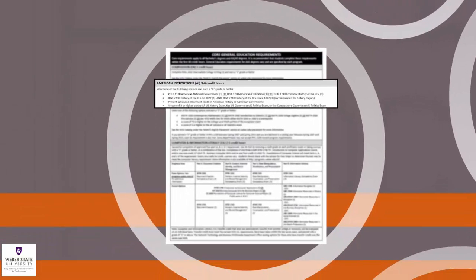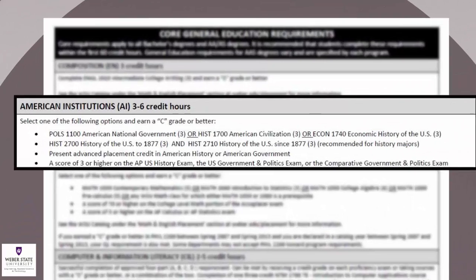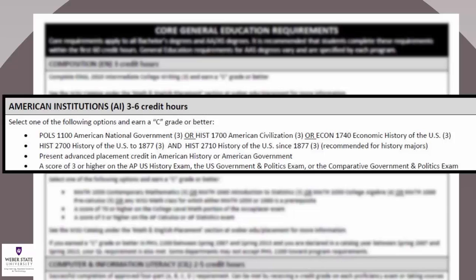The second requirement is American institutions. This requirement can be completed in one of five ways. You can either take Political Science 1100, History 1700, or Economics 1740, or a combination of History 2700 and 2710. Or if you received a score of 3 or higher on the AP U.S. History exam, the requirement will be complete. Please note that the fourth option is designed for History majors or minors. Most students complete the requirement by choosing a course from the first option to avoid taking an extra class. You are required to pass the class with a C or better.